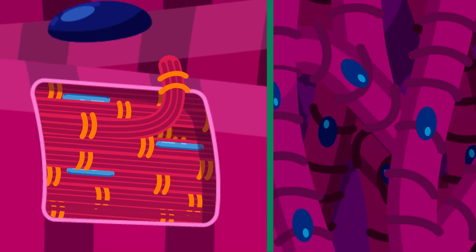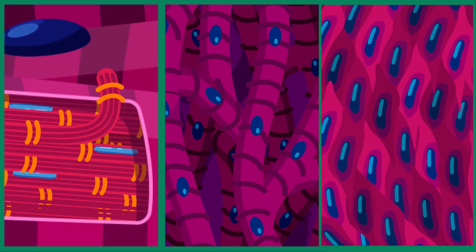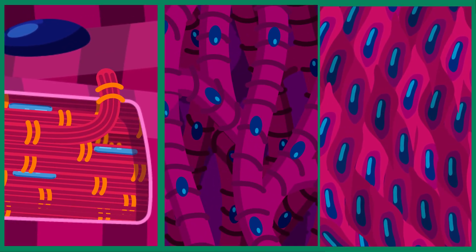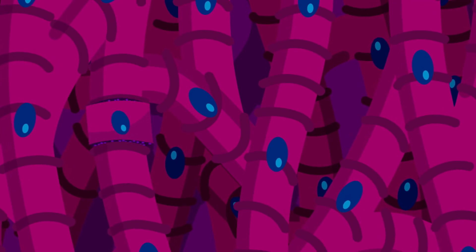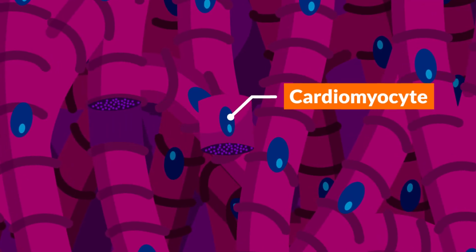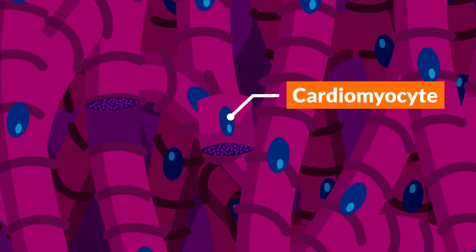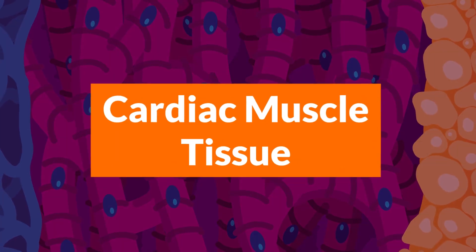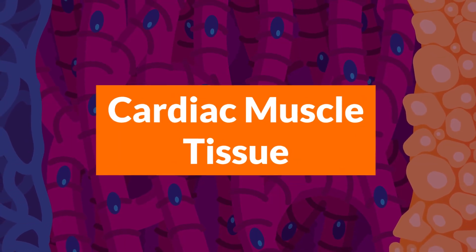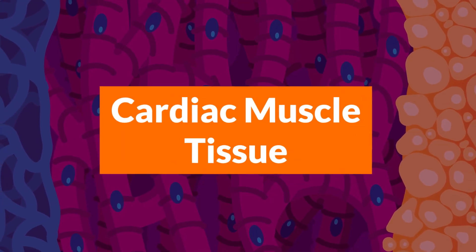The muscle cells in different parts of the body are specialized even further. For example, the muscle cells surrounding the heart, or cardiomyocytes, are short, branched, and interconnected cells that maintain heart contractility. Groups of cardiomyocytes form cardiac muscle tissue.